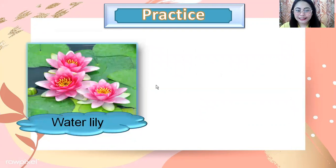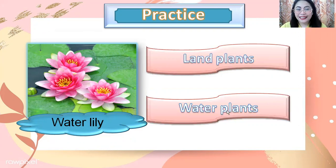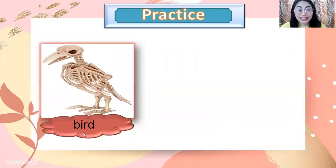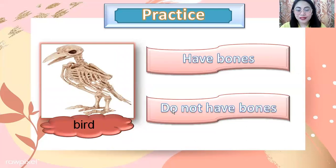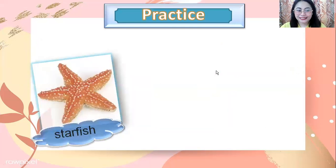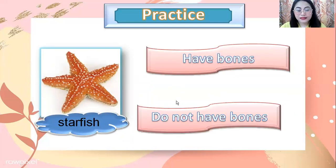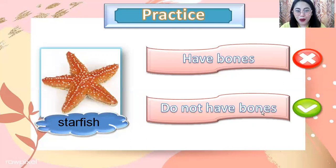Water lily — land plants or water plants? The answer is water plants. Bird — have bones or do not have bones? The answer is have bones. Starfish — have bones or do not have bones? The answer is do not have bones.